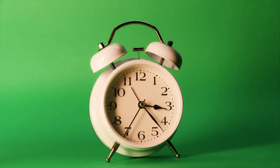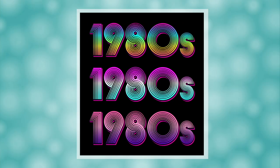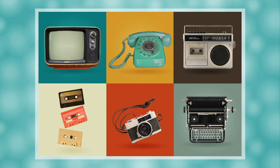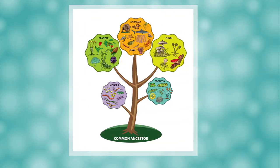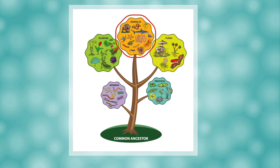We're actually going to start this lesson a few years in the past — the 1980s to be exact. Your parents or grandparents might have been learning biology at that time. If so, they would likely have seen a diagram like this, showing five kingdoms of living things: Protista, fungi, animalia, plantae, and monera.